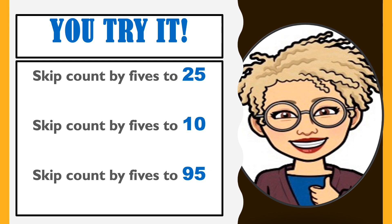The second one asks us to skip count by fives to 10. That's easy peasy lemon squeezy. Put it in the pot and make it cheesy. 5, 10.